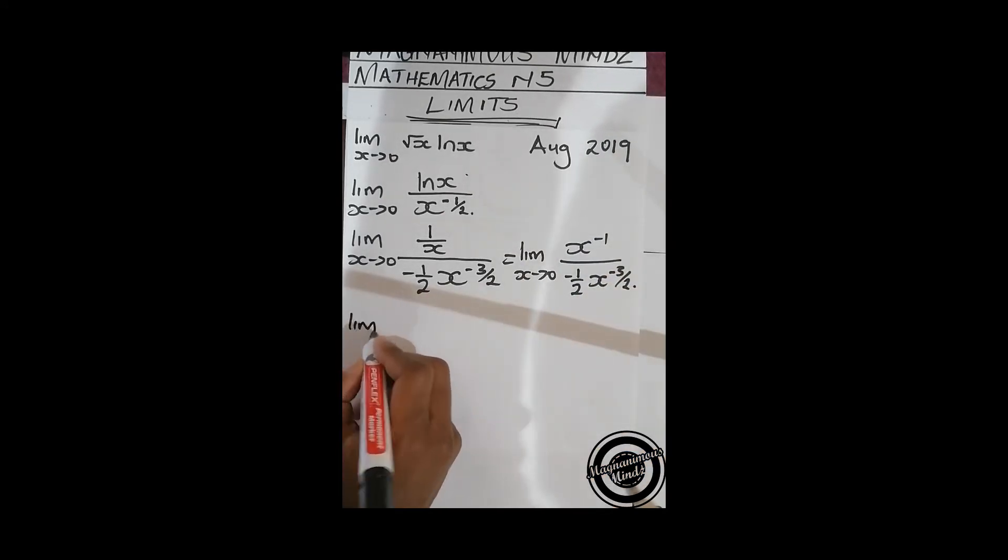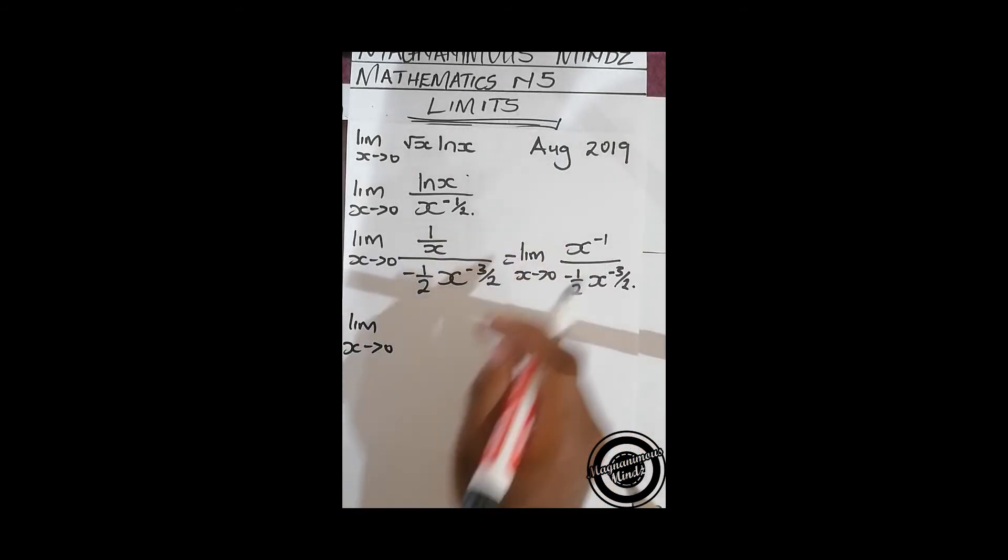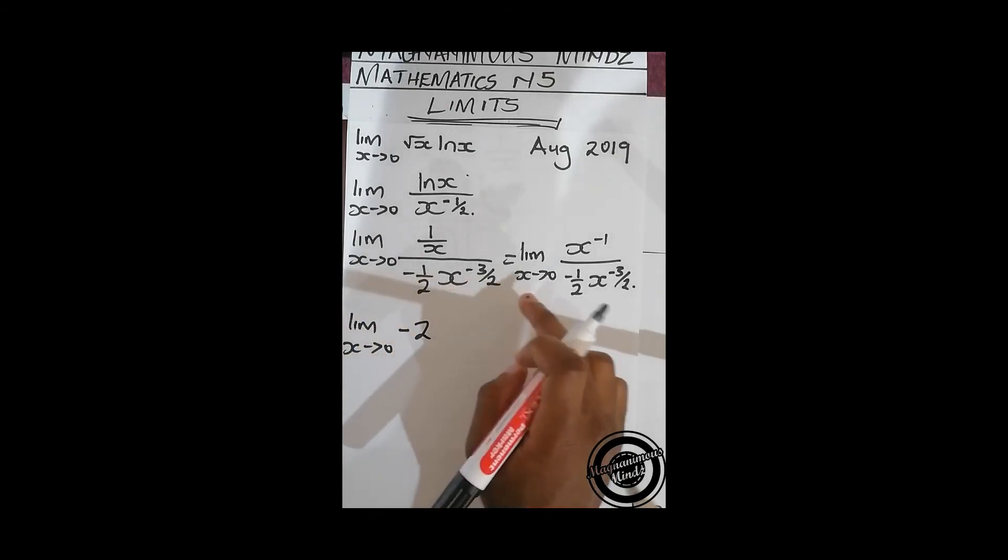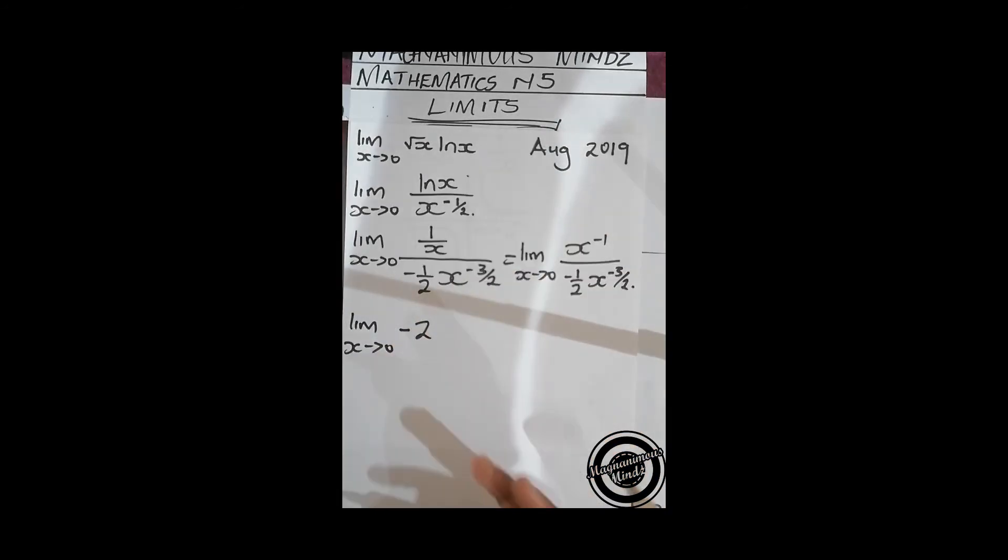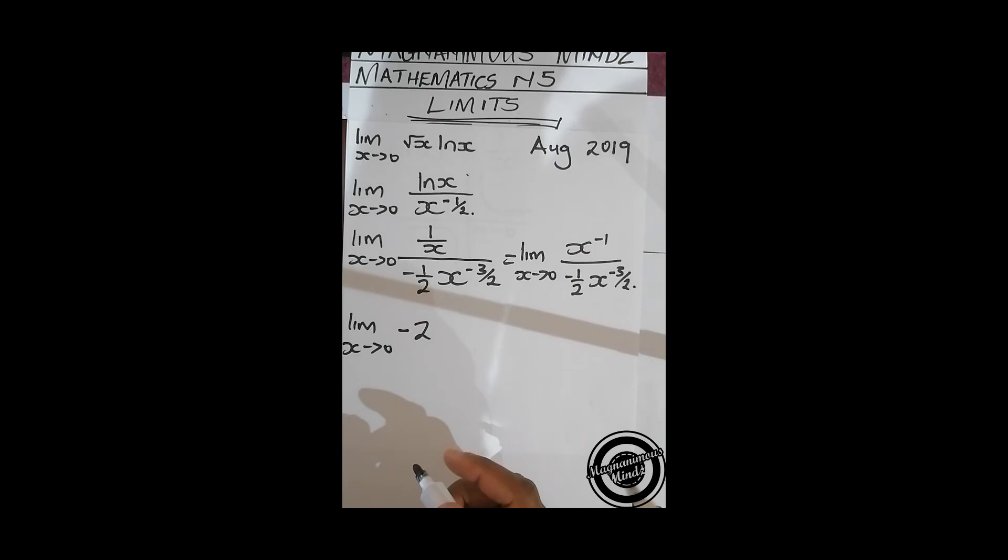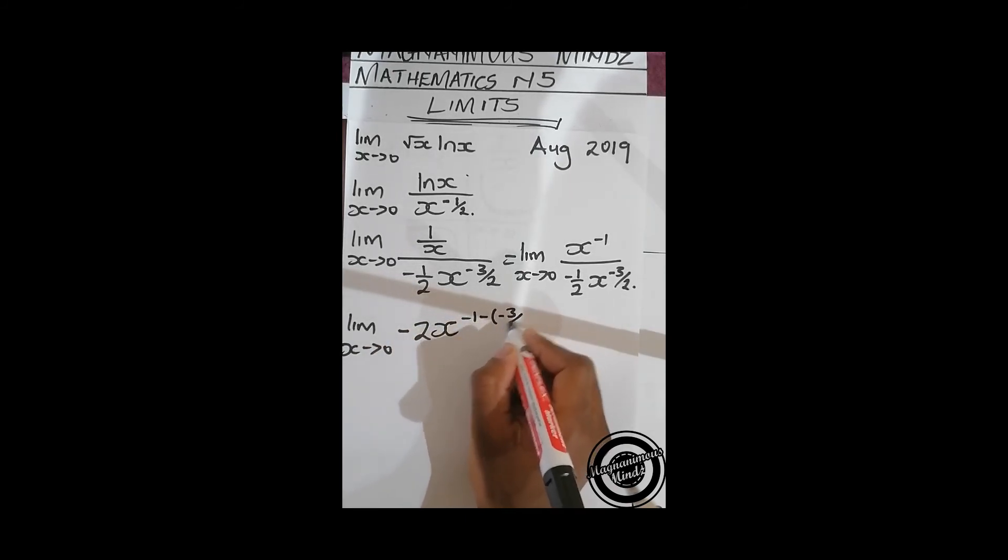This is lim x approaching zero. We take this to the top, so there's going to be negative 2. Since it's the same base and we're dividing, we'll subtract the exponents. So it's going to be x to the power negative 1 minus negative 3/2.